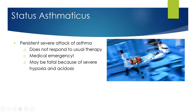Most asthma attacks can be regulated and treated with medications. However, there is a form of asthma known as status asthmaticus — a persistent, severe attack that does not respond to usual therapy. This is absolutely a medical emergency: call 911 if out of the hospital, or activate the code system if in the hospital. This can be fatal. These patients can develop respiratory failure and often need to be intubated so a machine breathes for them, and they can be sick for an extended period of time.